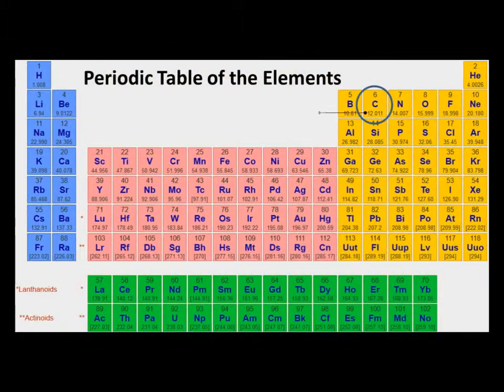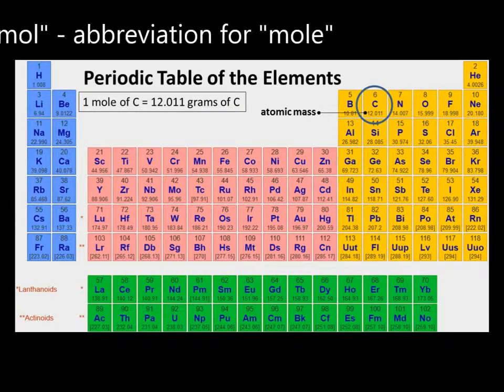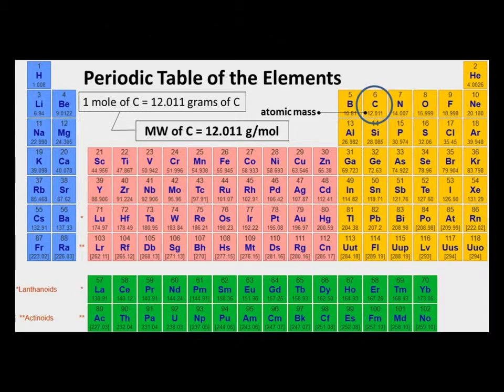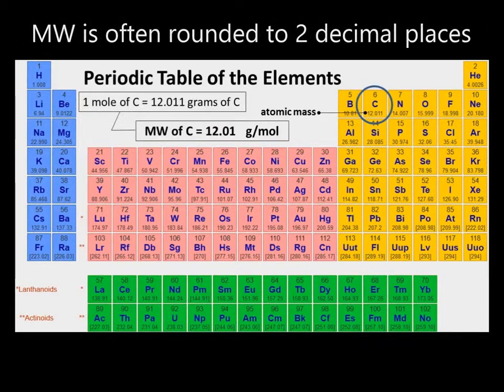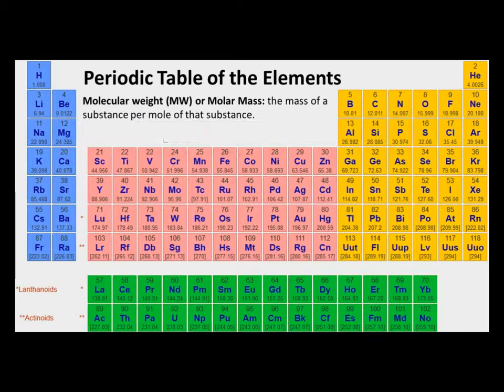Recall that the atomic mass of an element is the larger decimal number given on the periodic table. For example, one mole of carbon weighs 12.011 grams of carbon. This can be reworded as the molecular weight of carbon is 12.011 grams per mole, which is often rounded to two decimal places. So the larger number shown on the periodic table is the molecular weight for one mole of each element.